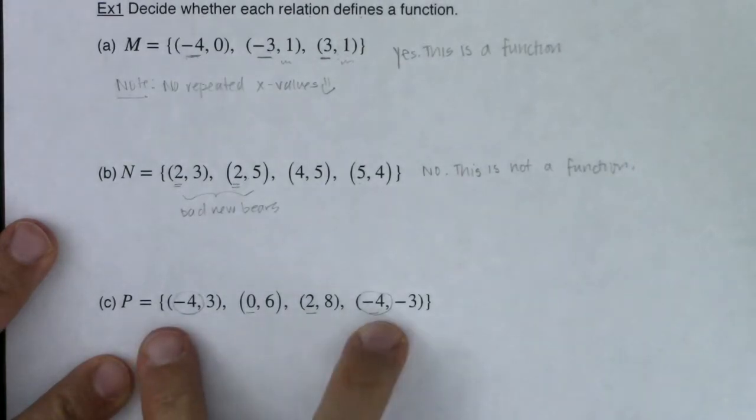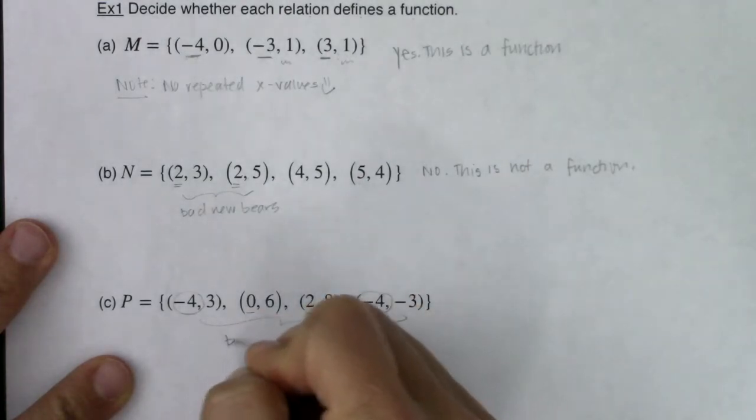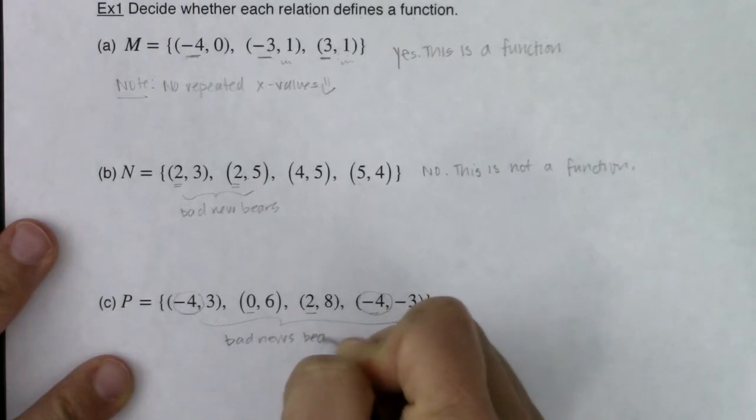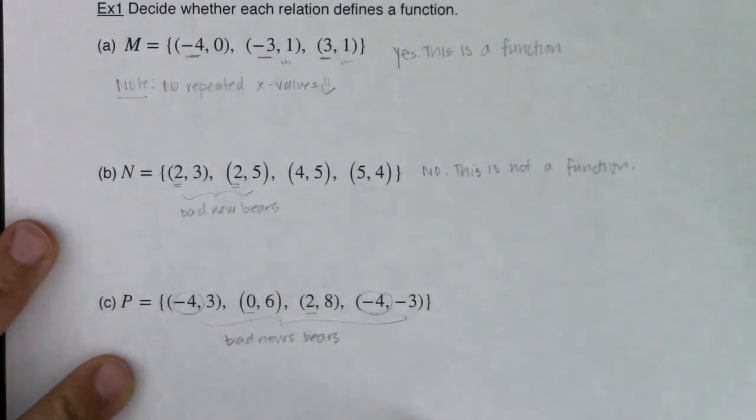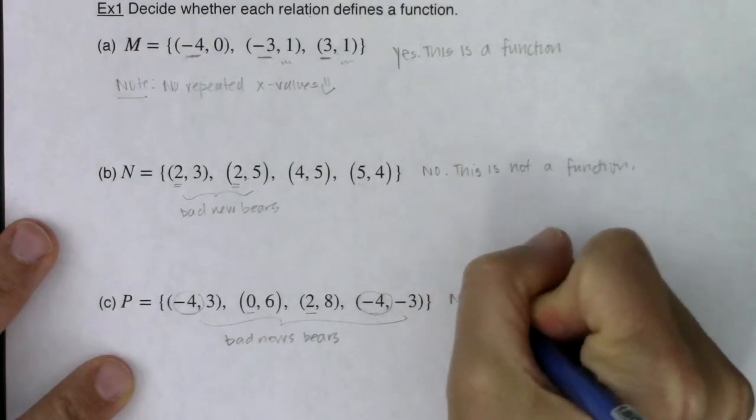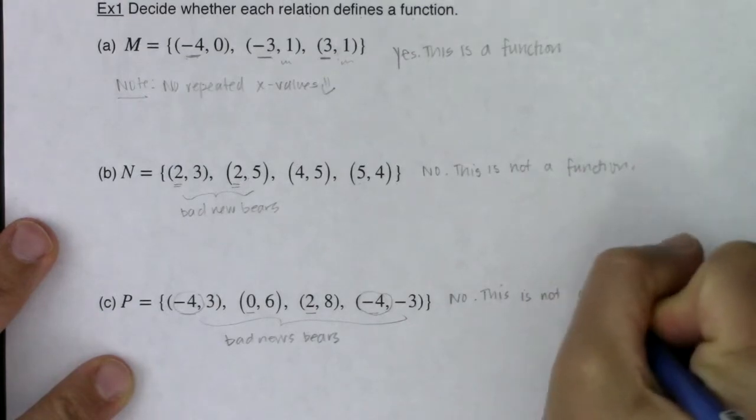When we look at that repeated X value, there were two different Y values. Negative 4 got mapped to 3 and negative 4 got mapped to negative 3. So again, this is bad news. At least it's bad news in terms of whether or not this relation is a function. So on this front, I would say no, this is not a function.